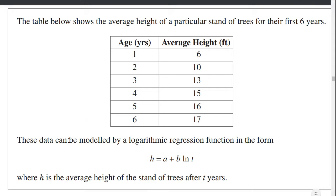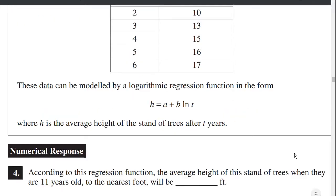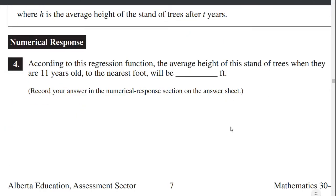These data can be modeled by a logarithmic regression function in the form H equals A plus B LN T, where H is the average height of the stand of the trees after T years. According to this regression function, the average height of the stand of trees when they are eleven years old to the nearest foot will be.